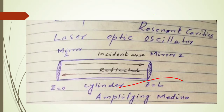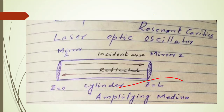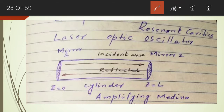In the previous diagram, this is the incident wave travelling along the positive Z-axis. The incident wave is travelling along the positive Z-axis inside the cylinder.